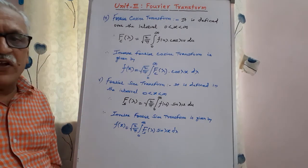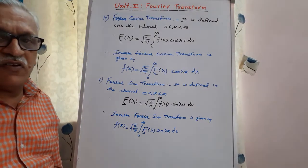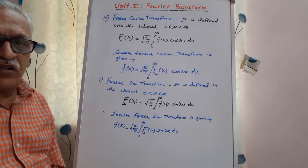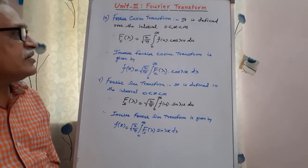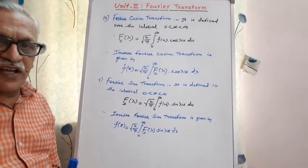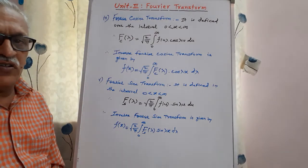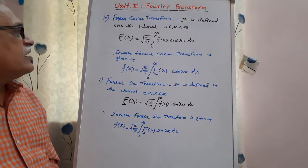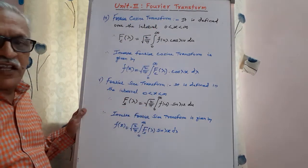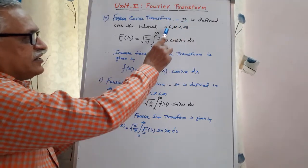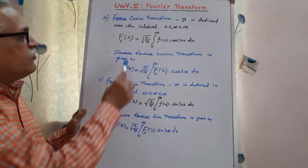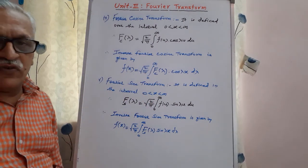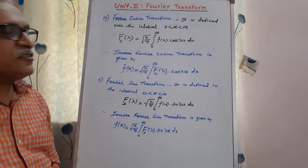In total there are five important results. The first two results are for Fourier transform when the interval is from minus infinity to infinity, and if you are not able to check the function for even or odd, use those first two results. If you can identify the function as even or odd in that interval, use the Fourier transform for even or odd function. For Fourier cosine transform and Fourier sine transform, the interval must be 0 to infinity. These are the five important formulas in Fourier transform.